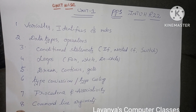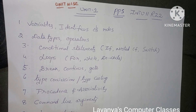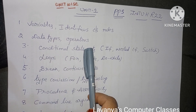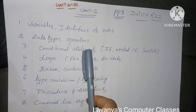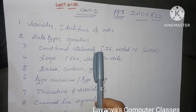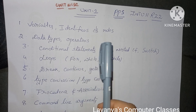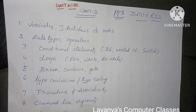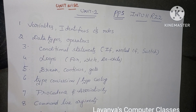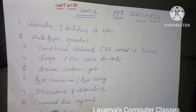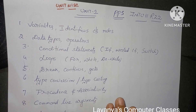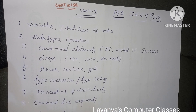This is the Unit 1 important questions. The first one is: what is a variable, what is an identifier, and what are the rules for declaring an identifier? This is the first question. Unit 1 is a lengthy unit covering the introduction to computers and C language fundamentals.